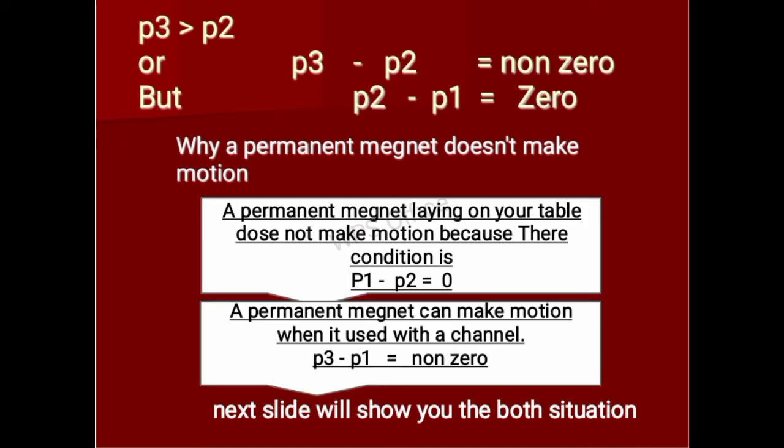Why does a permanent magnet not make motion? A permanent magnet lying on your table does not make motion because their condition is P1 equals P2 equals zero. A permanent magnet can make motion when it is used with a channel, where condition P3 and P1 equals non-zero. The next slide will show you both situations.